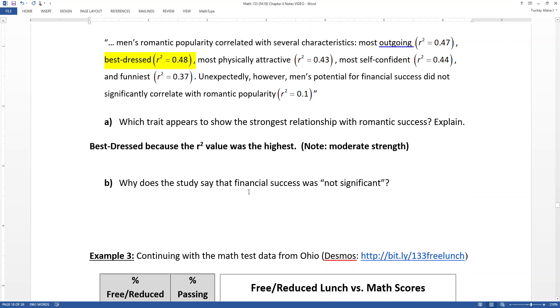Why does this study say that financial success was not significant? That's because the R-squared value for financial success is so low. Perhaps lower than one might have originally thought. And that's because, well, it can be what it is, but what's happening is that's causing us to have a not-significant relationship.